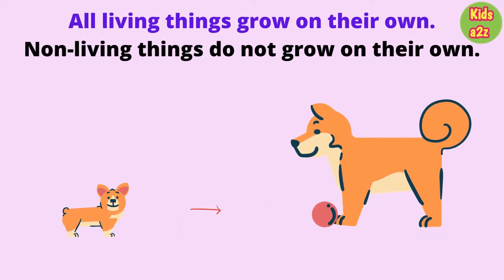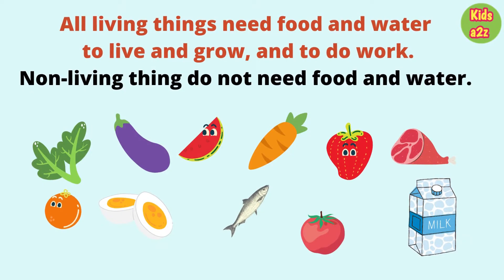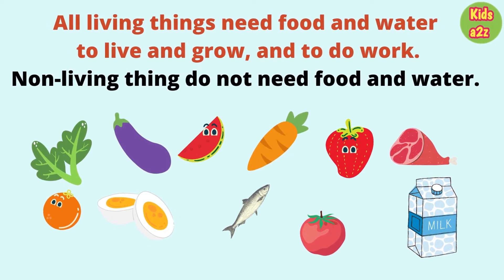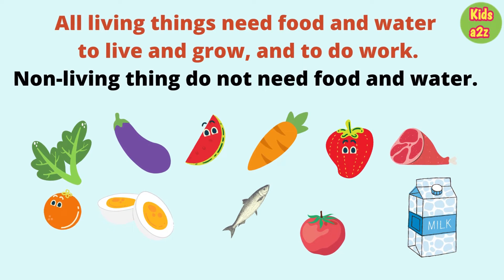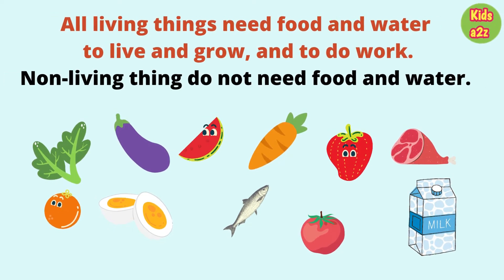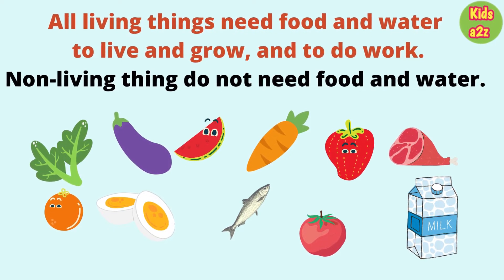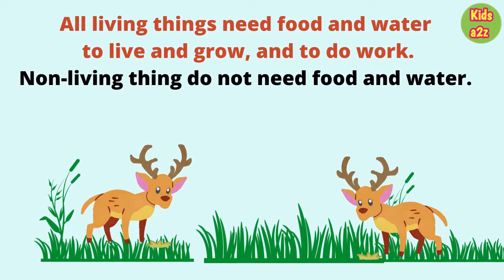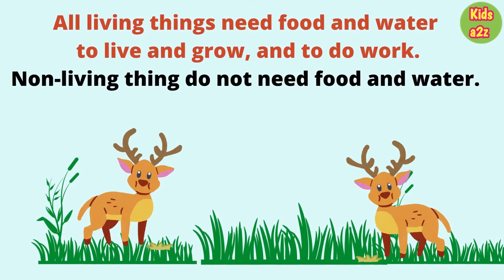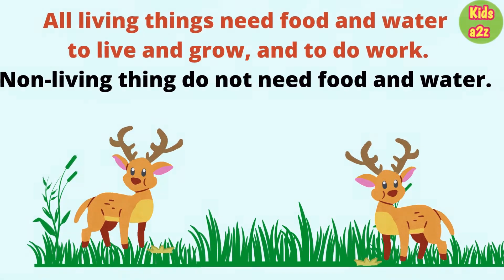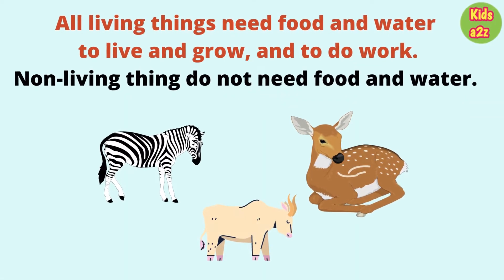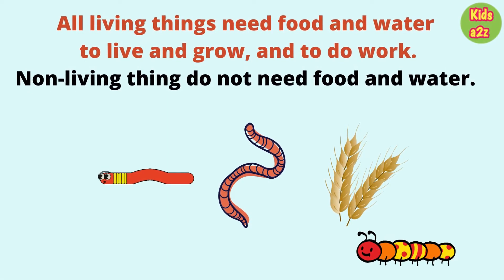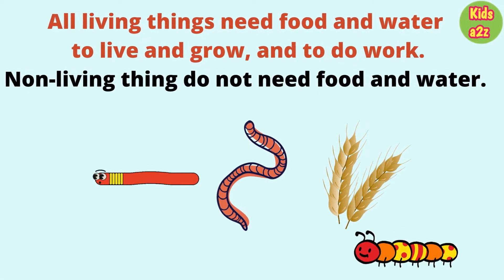All living things need food and water to live, grow, and do work. Non-living things do not need food and water. We eat fruits, vegetables, milk and eggs. Cows, buffalo, goats and deer eat grasses and plants. Lions, tigers and leopards eat the flesh of other animals. Most birds eat food grains and worms.